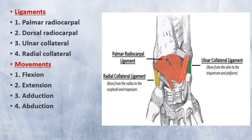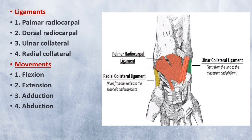There are four main ligaments at the wrist joint. The palmar radiocarpal ligament, on the palmar anterior side, passes from the radius to both rows of carpal bones; it increases stability and ensures the hand follows the forearm during supination. The dorsal radiocarpal ligament, on the dorsal posterior side, passes from the radius to both rows of carpal bones; it contributes to stability and ensures the hand follows the forearm during pronation. The ulnar collateral ligament runs from the ulnar styloid process to the triquetrum and pisiform, preventing excessive radial deviation. The radial collateral ligament runs from the radial styloid process to the scaphoid and trapezium, preventing excessive ulnar deviation.